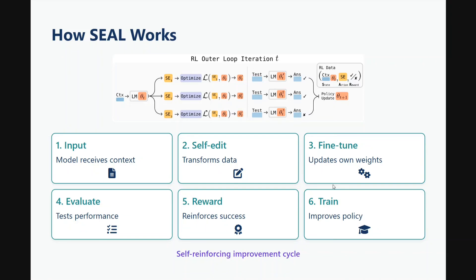After the self-edit is generated, fine-tuning happens on the dataset the model has prepared for itself, using the parameters in the self-edit. Then evaluation on the downstream task occurs, followed by a reward signal. If the results are good, the model is rewarded and the loop continues. Otherwise, it goes for another strategy and generates a new dataset. This is how SEAL works — it's quite intuitive.